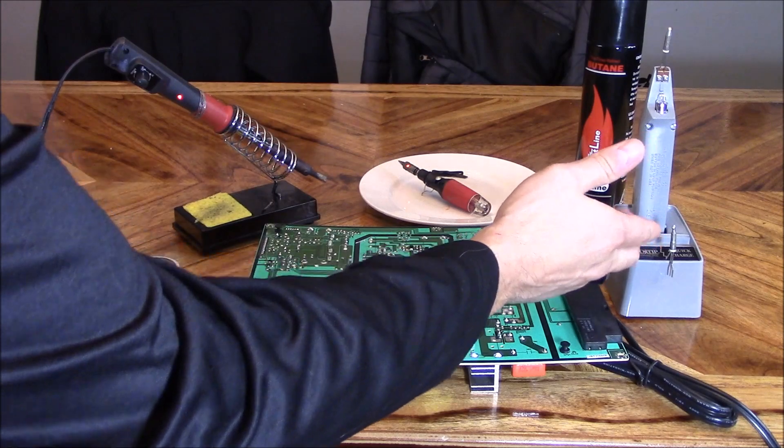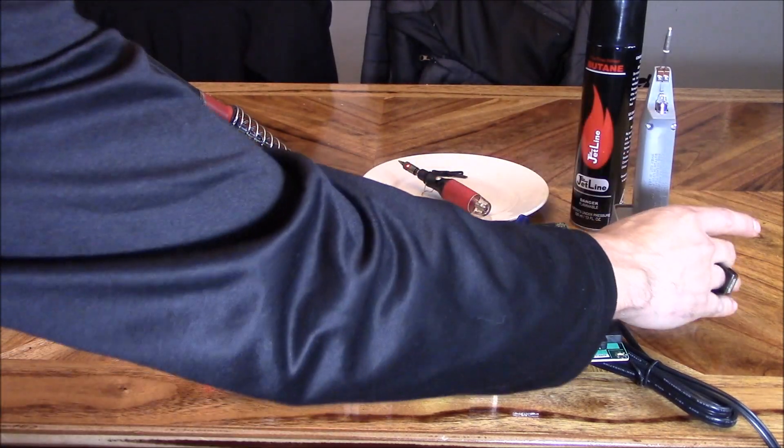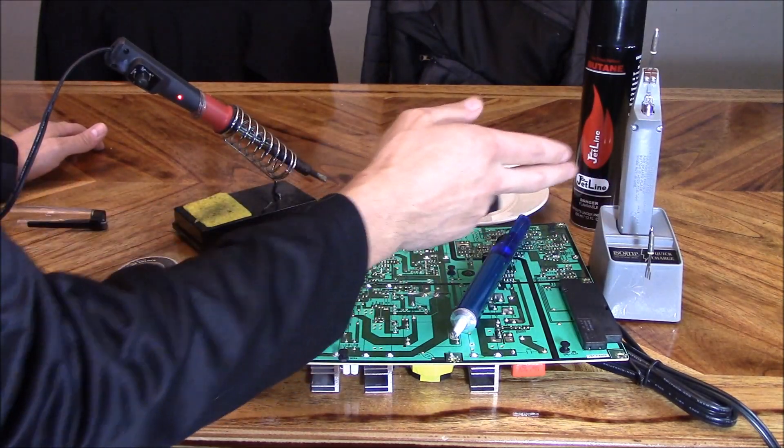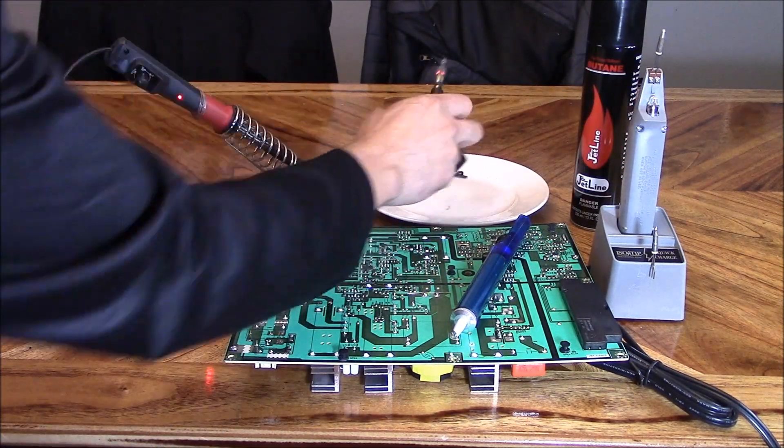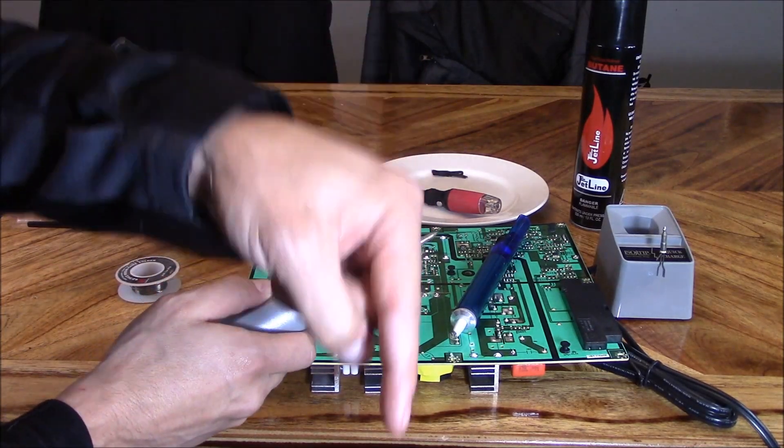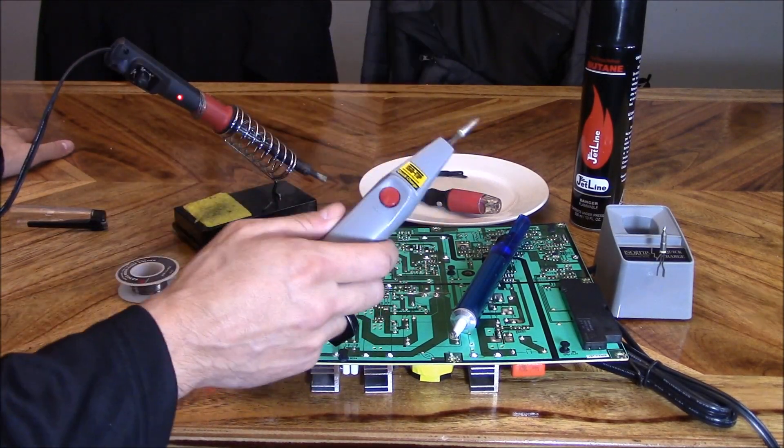Which one do I use the most? I would say I use the Isotip the most. It's the most reliable. It's the fastest to heat up, ready to use, and it's portable. The butane, I tend not to use too much. This thing goes for about $50. I'll leave a link in the video description below. It's definitely worth $50.